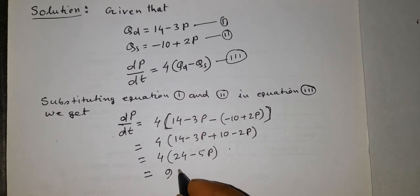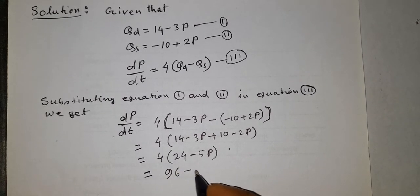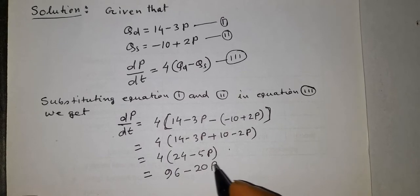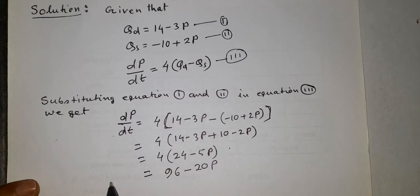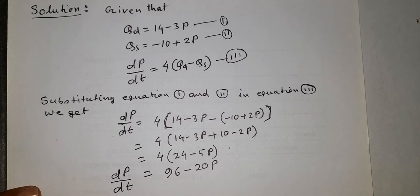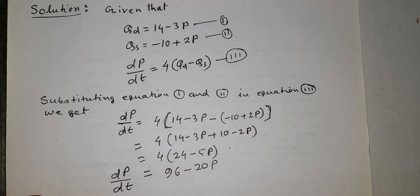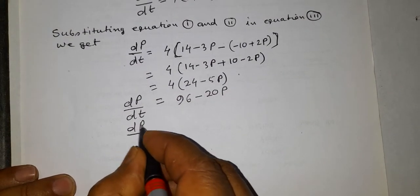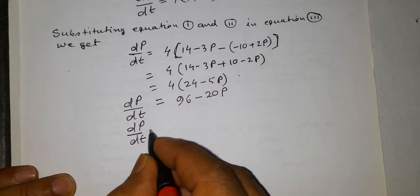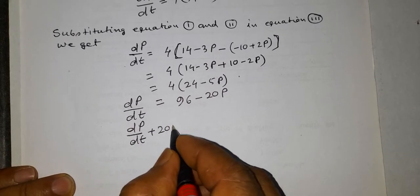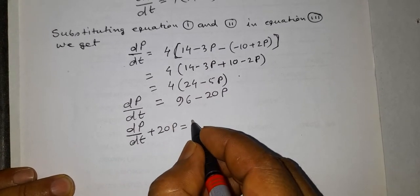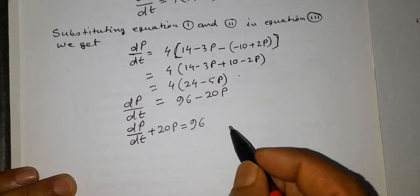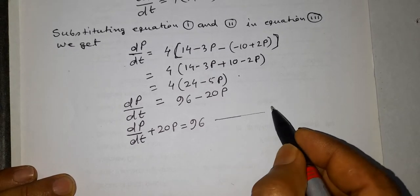So, 4 times (24 − 5p) = 96 − 20p. Therefore dp/dt = 96 − 20p, or rearranging: dp/dt + 20p = 96. This is equation number 4.